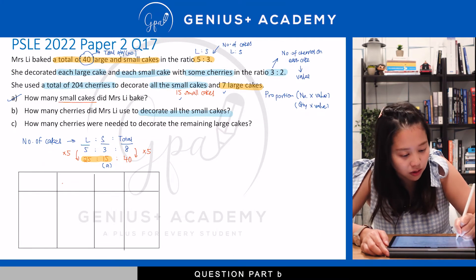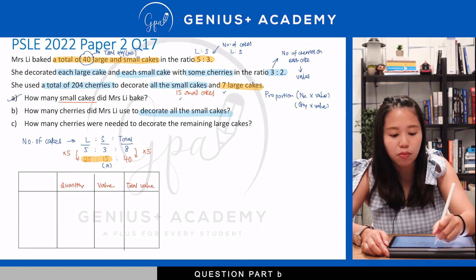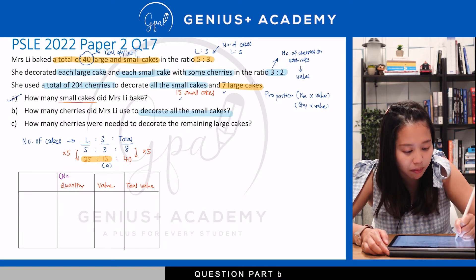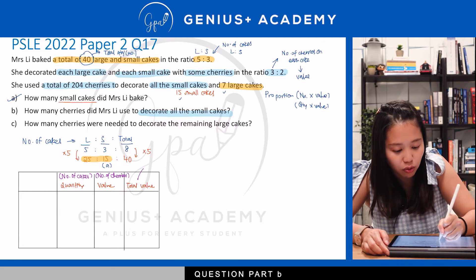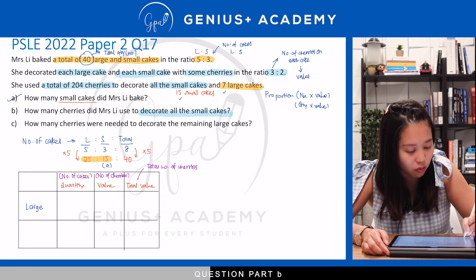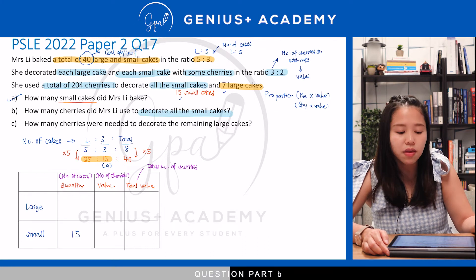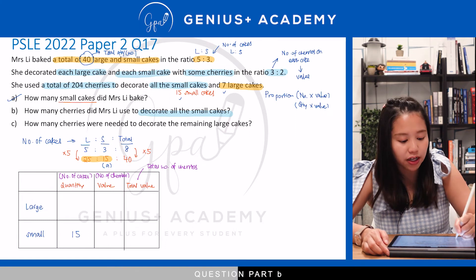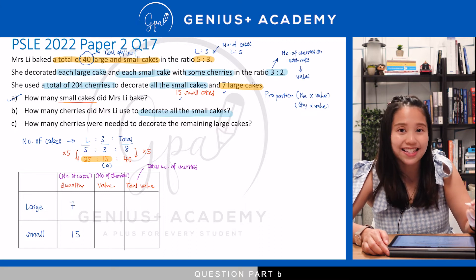I'm going to put in quantity times value, which gives the total value. Quantity refers to the number of cakes; value refers to the number of cherries on each cake; total value refers to the total number of cherries used for each type of cake. I have two types, so I'll break it into two rows: large cakes and small cakes. From the third sentence, all 15 small cakes were decorated, and 7 large cakes were mentioned. For large cakes, we don't know the exact cherries per cake, so we put 3 units; for small, 2 units. The total cherries on 7 large cakes is 7 times 3 units equals 21 units, and for 15 small cakes it is 15 times 2 units equals 30 units.